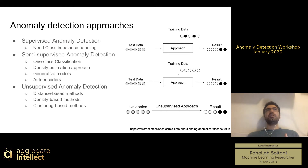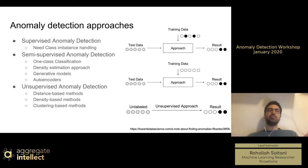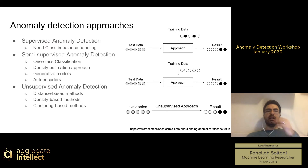We won't cover supervised methods that much because usually you won't have labeled data. But we will have a section for that, maybe at the very beginning. We'll provide some data that will sometimes have labels, and we'll use some supervised methods like neural network models to try to find anomalies and get some performance. Then we'll do semi-supervised and unsupervised ones to compare these methods and techniques.